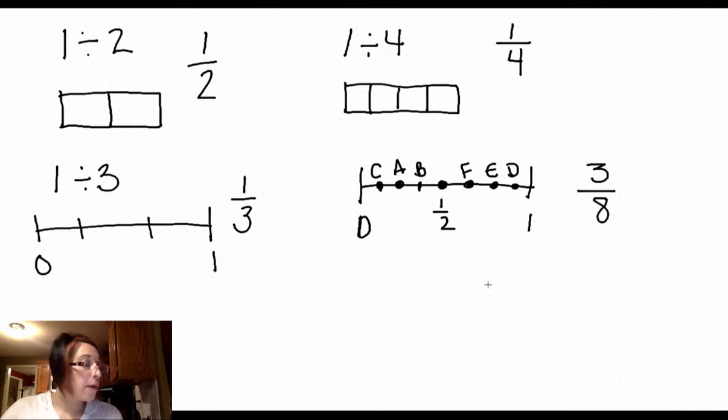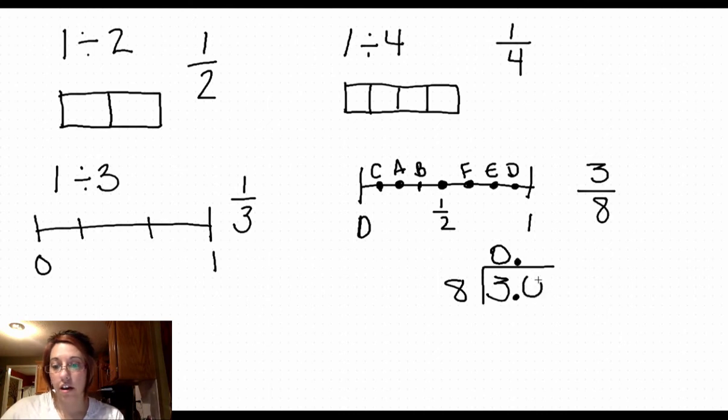Now before break, we started working on using these fractions and converting them to decimals. So if I wanted to know the decimal for 3 eighths, 3 would become my dividend, 8 would become my divisor. Add my decimal in, add a 0, 8 will go into 30, 3 times. That's 24.